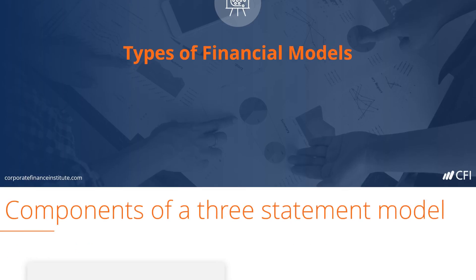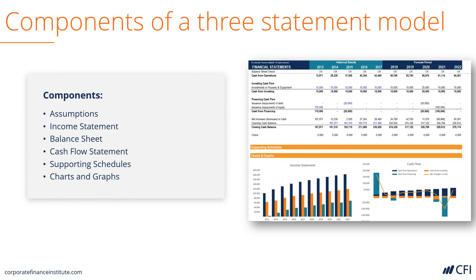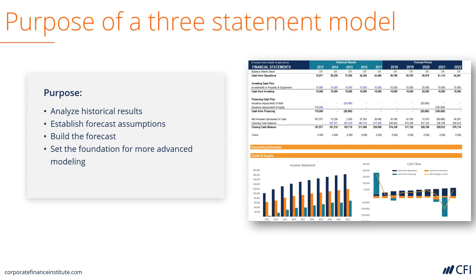Types of Financial Models. The fundamental building block of all financial models is the three-statement model. It simply models a company's income statement, balance sheet, and cash flow statement. It also uses supporting schedules and assumptions to connect everything using formulas in Excel. The use of the three-statement model is primarily to analyze historical results and set up a forecast for the future. It sets the foundation on which all other models are built.